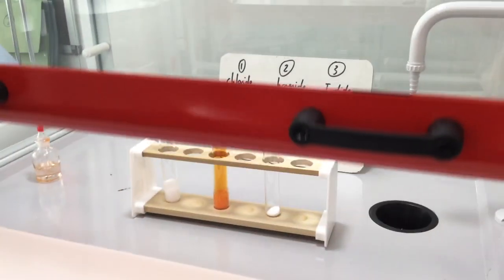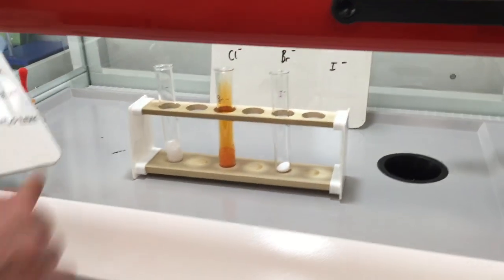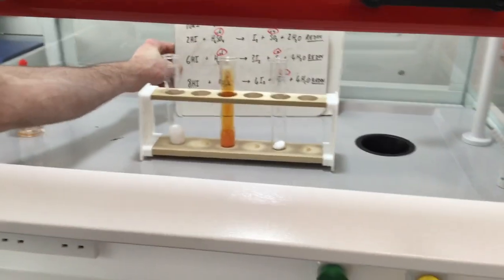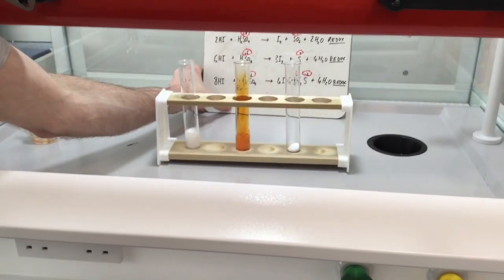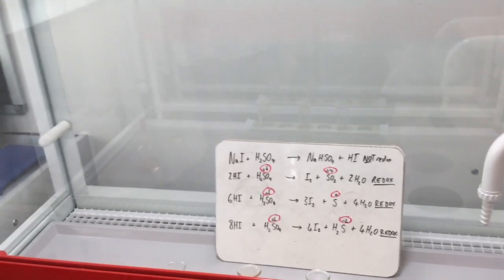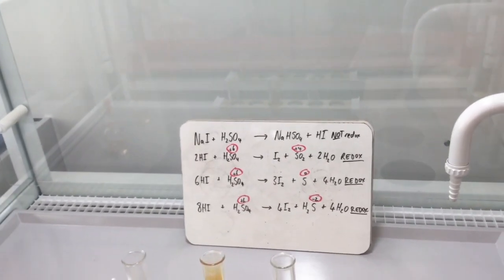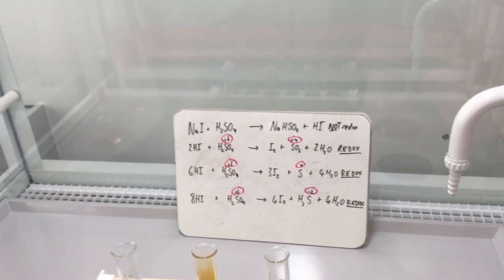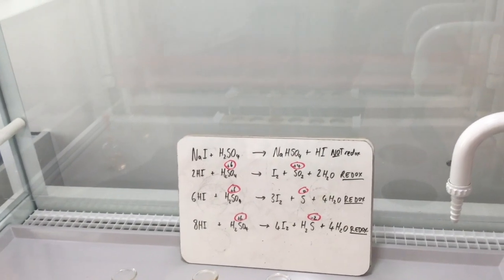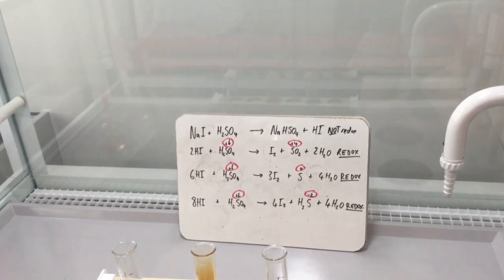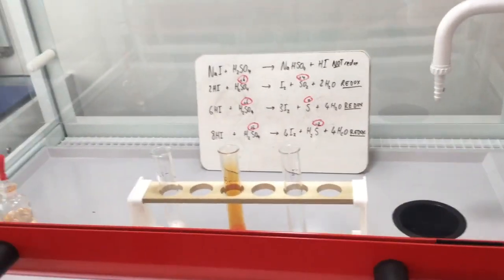We're going to do the same reaction again but this time with iodide. Iodide is an even better reducing agent than bromide and better than chloride. It's actually going to react with the acid four times and it's going to reduce the sulfur in the acid from plus six to plus four in sulfur dioxide, to zero in sulfur, and then to minus two in hydrogen sulfide. So we get quite a lot of gaseous products in this reaction.